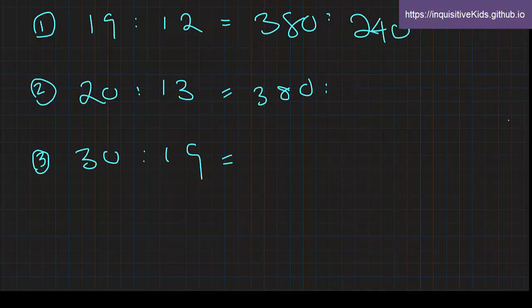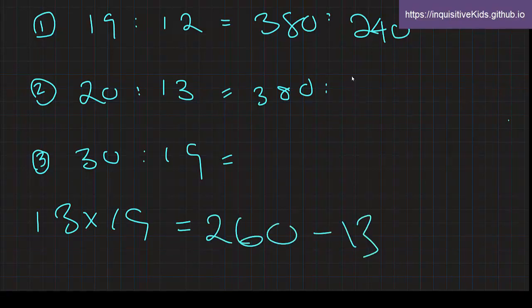And we know that 20 times 19 is equal to 380. So 13 times 19 would be equal to, well, that's 260 minus 13, which is equal to 247.